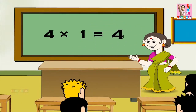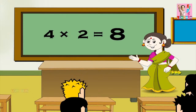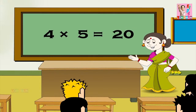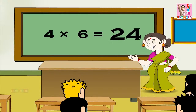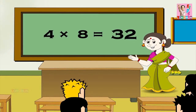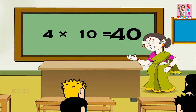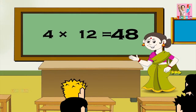4 1s are 4, 4 2s are 8, 4 3s are 12, 4 4s are 16, 4 5s are 20, 4 6s are 24, 4 7s are 28, 4 8s are 32, 4 9s are 36, 4 10s are 40, 4 11s are 44, and 4 12s are 48.